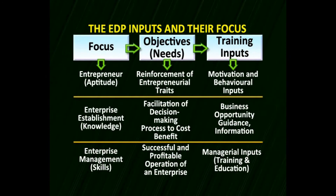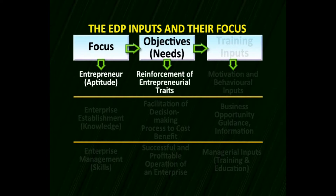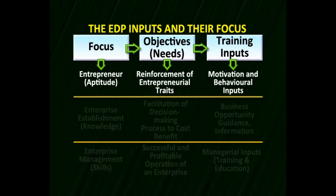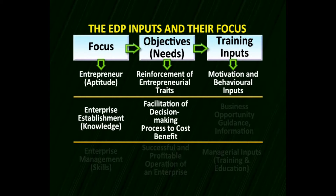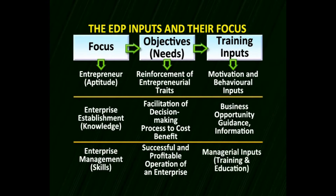In terms of requirements, first is focus — what is an entrepreneur? We require an aptitude, which is a behavior and ability. The objective is the reinforcement of entrepreneurial traits and cultivating these traits and behaviors. Then come training inputs in terms of motivation and behavioral inputs. For enterprise establishment, knowledge is required. Decision-making through cost-benefit analysis facilitates the guided information required to do business. Successful enterprises can be created by right management, and managerial inputs in terms of training and education are required.